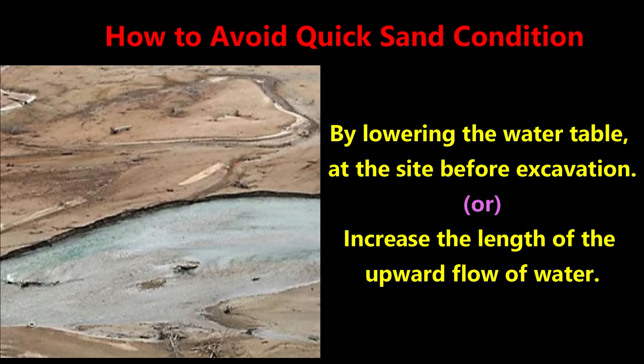Quicksand condition is prevented by lowering the water table at the site before excavation, or by increasing the length of the upward flow path of water. These are a few things about quicksand.